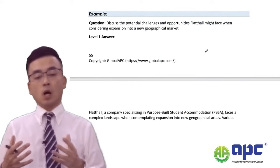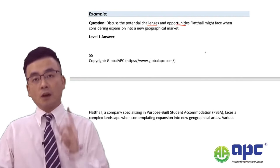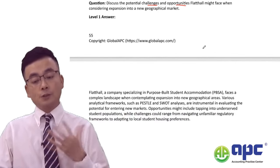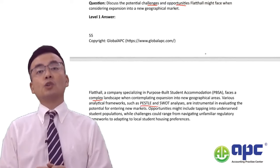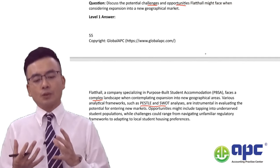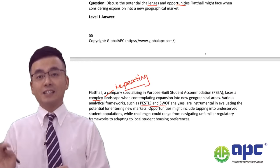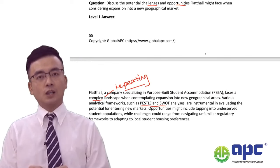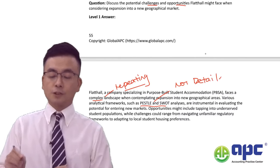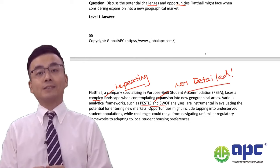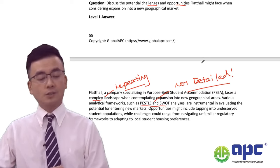A Level 1 answer says: 'We've got a very complex environment, therefore using PESTLE or SWOT analysis may help.' This is a Level 1 answer because you're simply repeating the requirement. There's no point in writing introductions into your answer script. At the same time, you have not detailed the model at all — for example, you say 'PESTLE analysis' but don't explain what each letter stands for or apply it to the case. Now, if we make some application to the case, that becomes a Level 2 answer.